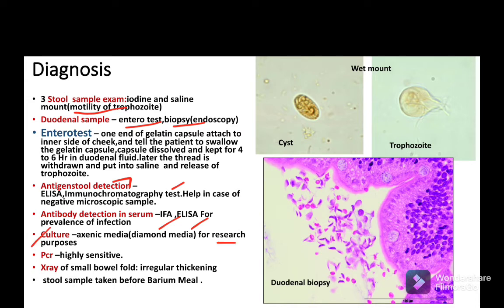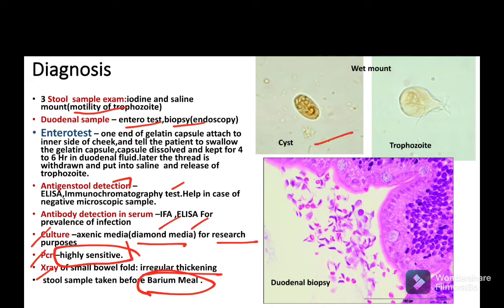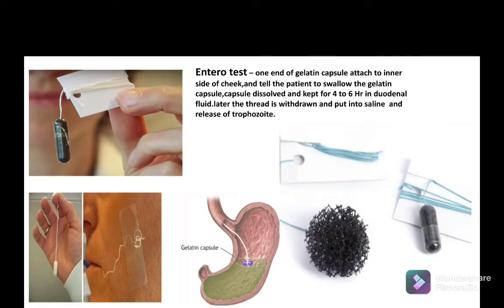Culture using the Diamond medium method can be used for research purposes, and PCR is highly sensitive for detection. On X-ray, irregular thickening of the small bowel folds can be seen. For barium meal, stool samples should be taken before the procedure. On wet mount, quadrinucleated cysts and pear-shaped trophozoites are visible. On duodenal biopsy, sickle-shaped trophozoites are seen in the lateral view.